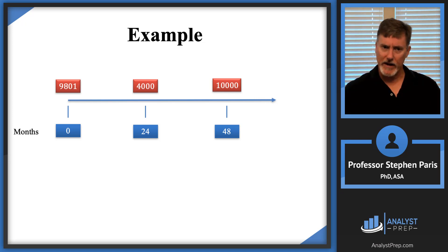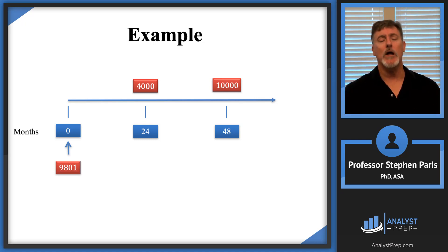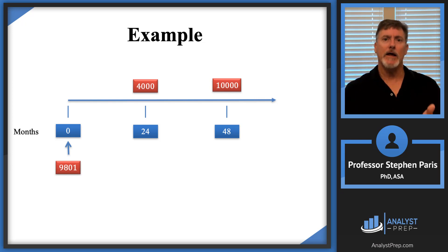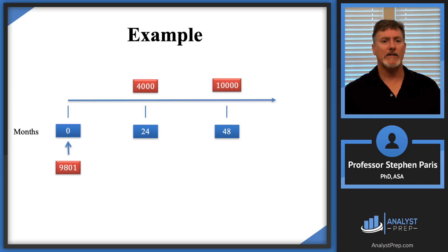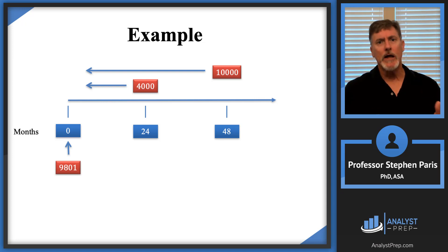Going back to the picture without arrows: the 9801 at time zero is actually the total present value of the other two payments. So I move 9801 below the timeline with an arrow pointing up to time zero — that arrow indicates my valuation date. I'm going to value all payments at that point. The payment of 4,000 at time 24 gets discounted back to time zero. The separate 10,000 payment at time 48 also gets discounted back to time zero. Those two present values add together to give 9801.